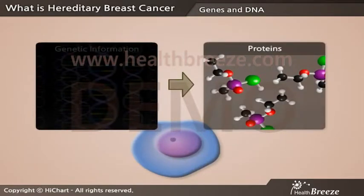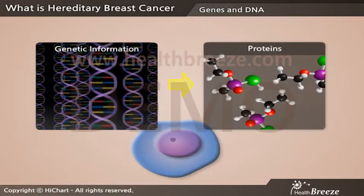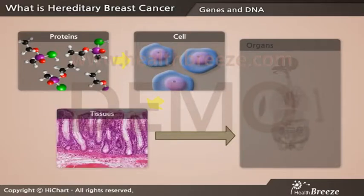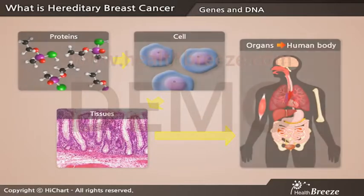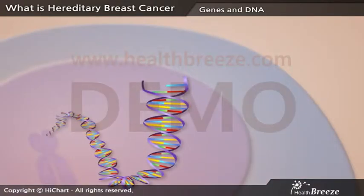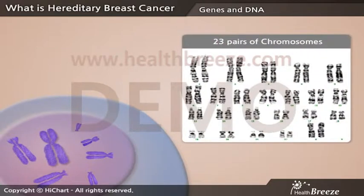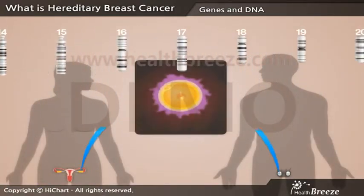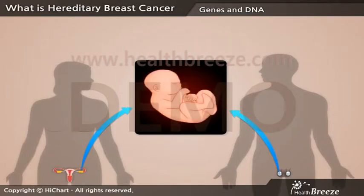Human cells make proteins using the genetic information stored in the DNA sequences. These proteins are used to form cells, cells form tissues, tissues form organs, and organs form the human body. DNA in the cell bands together to form 23 pairs of chromosomes, to give a total of 46 single chromosomes. Children inherit genetic information by receiving 23 single chromosomes from their mother and 23 single chromosomes from their father.